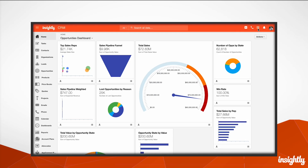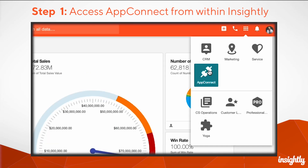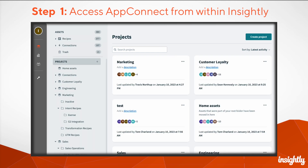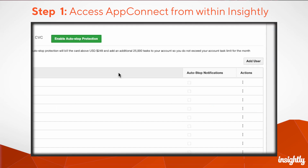First, you'll want to access AppConnect from within Insightly. If you don't see the app available, you may need to contact your Insightly admin to be added as an AppConnect user.